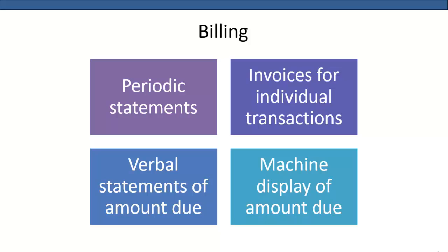Billing can be periodic statements, like when you receive the bill from your mobile phone service provider. It can be an invoice for an individual transaction, such as from a storage service. Billing can also be a verbal statement of an amount due from service personnel, or a machine display of an amount due, like when paying for a train ticket. Busy customers do not like to be kept waiting for the bill — hotels, for example, often push the bill under the room door on the morning of checkout. Bills must also be accurate; an error in the bill can mar an otherwise fantastic service experience.